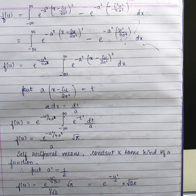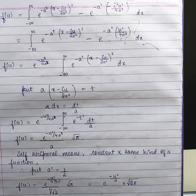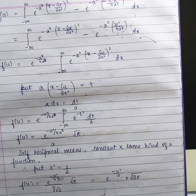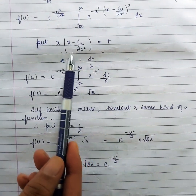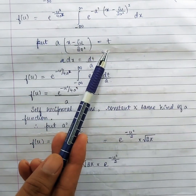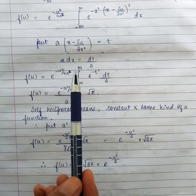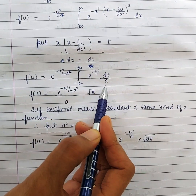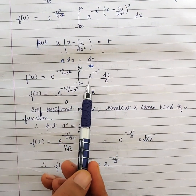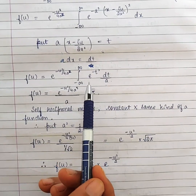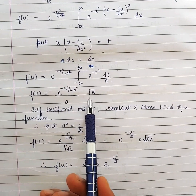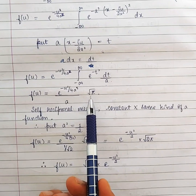We substitute t = a(x - iu/(2a²)), so that the exponent becomes e^(-t²). Then a dx = dt, meaning dx = dt/a. The integral becomes (1/a) times the integral from minus infinity to infinity of e^(-t²) dt. We know this standard result equals √π, so the integral evaluates to √π/a.